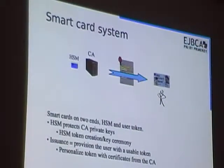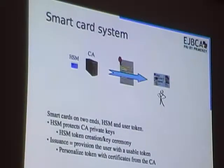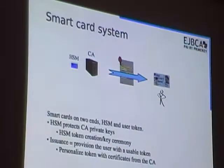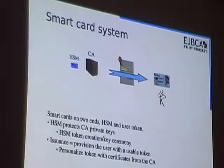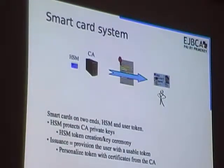It's usually required that this process can be audited, at least if it's for a company or country-scale deployment. On the right-hand side, you have the issuance or provisioning of users with their usable tokens, which they can use to do online banking, online voting, or whatever. That involves personalizing a smart card, which comes blank when received, so that it actually contains your identity and your certificate.